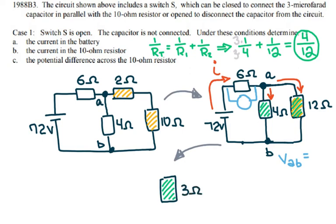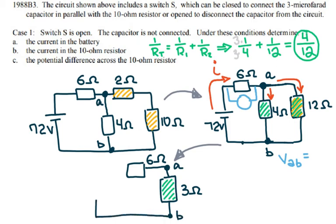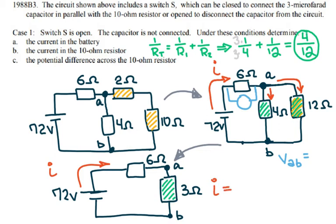Now I have the 3 ohm parallel equivalent and the 6 ohm resistor in series, with the 72 volt battery. Points A and B are still present. The two series resistors give a total resistance of 9 ohms. From Ohm's law, V = IR, so the current is 72 divided by 9, giving a total current of 8 amps leaving the battery.